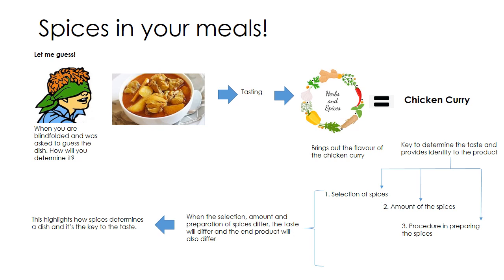In order to determine the taste and identity of a product, you need a proper selection of spices, the right amount, and the proper procedure in preparing them. When all three steps are followed, you get the right taste for that particular dish. So in this example, when I give you a chicken curry blindfolded, you are able to identify it based on the taste and flavor that results from the spices used.